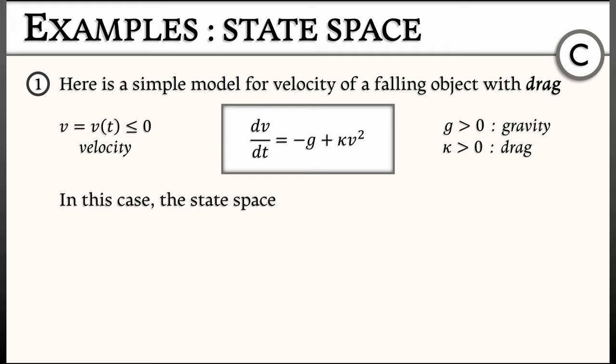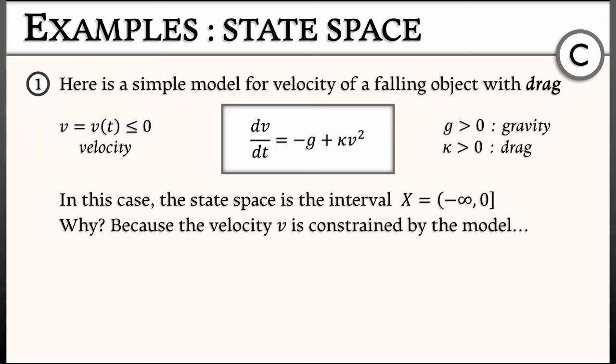and they're both positive. Now, in this case, the state space is going to be the interval x from negative infinity to zero. Now why is that? That's because this body is falling and the velocity is constrained by the model to be negative. The body is falling down.